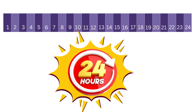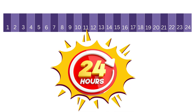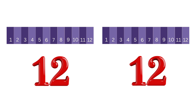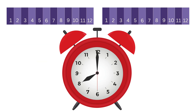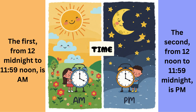We have 24 hours in a day. We divide 24 hours into two segments of 12 hours each. We have 12 numbers on a clock. The first from 12 midnight to 11:59 noon is a.m., and the second from 12 noon to 11:59 midnight is p.m.